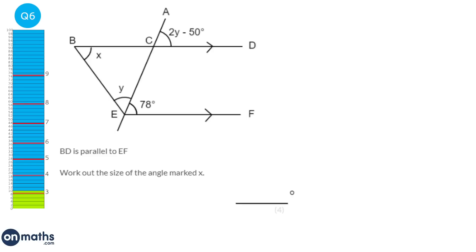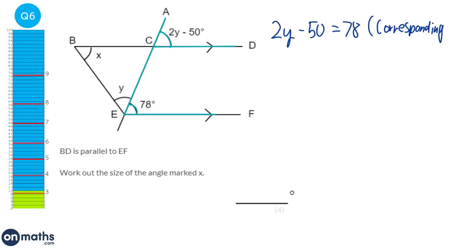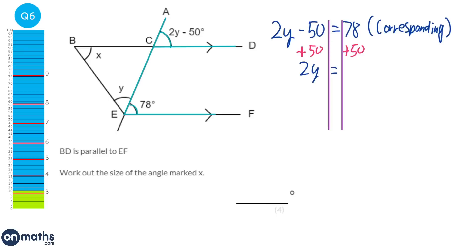To find x we first find y. We've got two sets of parallel lines with a transversal, giving us F-shaped corresponding angles. So 2y minus 50 equals 78 — reason: corresponding angles are equal. Adding 50 to both sides gives 2y equals 128, then dividing by 2 gives y equals 64.